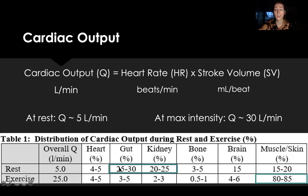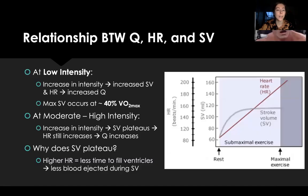At rest, most of your blood flow goes to your guts and kidneys. But during exercise, that distribution shifts to your muscles and your skin — your muscles are working hard, and your skin needs to be able to release that heat we were talking about.